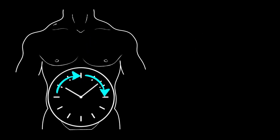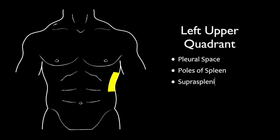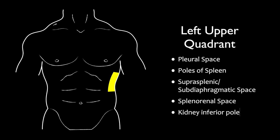After finishing the sub-xiphoid view, we continue clockwise to the left upper quadrant. The left upper quadrant is more difficult than the right — because the spleen is so much smaller, you can't use the anterior abdomen. You really need to get very posterior on these patients. I like to go all the way to the posterior axillary line, fan a little bit anterior, and if I don't see the spleen, drag the probe just slightly anterior. We're going to evaluate from the pleural space all the way to the inferior pole of the kidney and spleen.